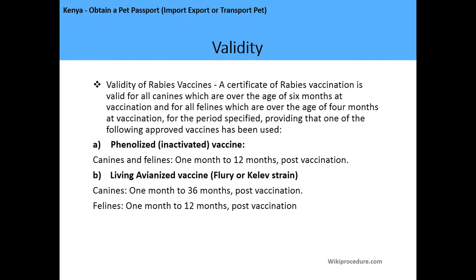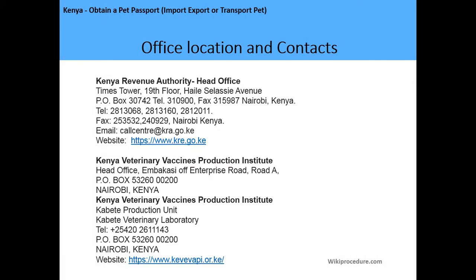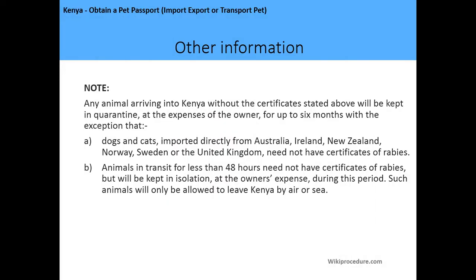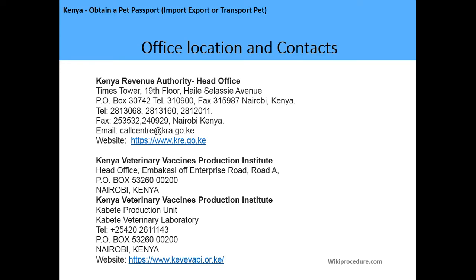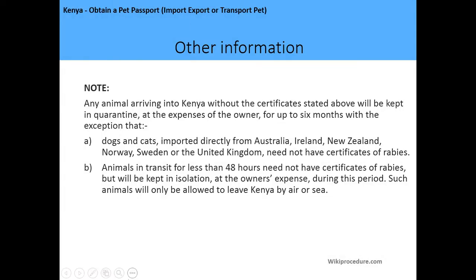The processing time is one day. The office location for the Kenya Revenue Authority head office is at Haile Selassie Avenue, Times Tower, and you can also visit their website at www.kra.go.ke. For the Kenya Veterinary Vaccines Production Institute, the head office is on Enterprise Road, Nairobi, and the production unit is where you can obtain the actual vaccine. Their website is www.kevevapi.go.ke.